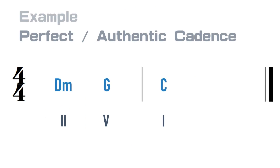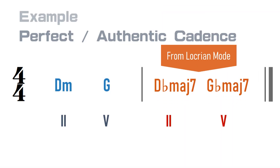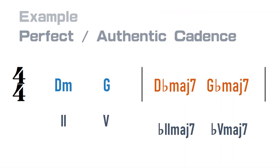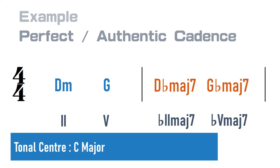In this drifting cadence I made, I substitute the final 1 chord with the 2 and 5 chords from the Locrian mode. Or you can just call them a ♭2 major 7 chord and ♭5 major 7 chord from the original C major key.